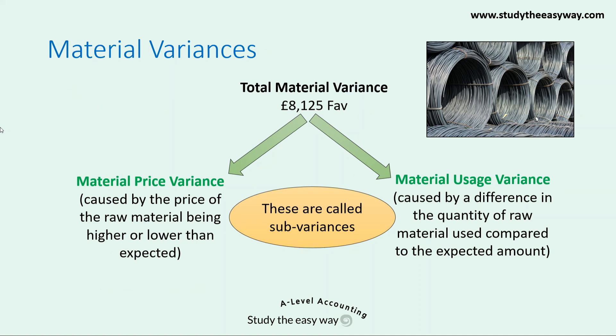The total material variance can be split into two sub-variances: the material price variance and the material usage variance. The material price variance is caused by the price of the raw material being higher or lower than expected. The material usage variance is caused by a difference in the quantity of raw materials used compared to what the business had expected to use.